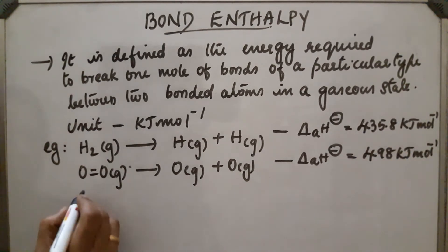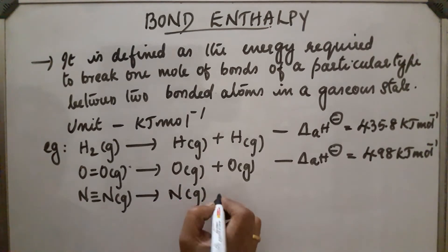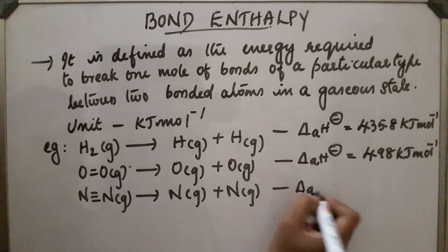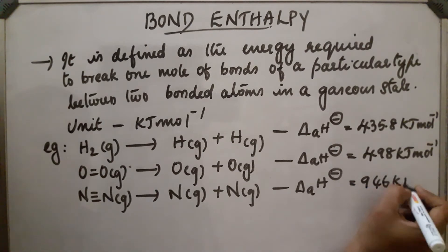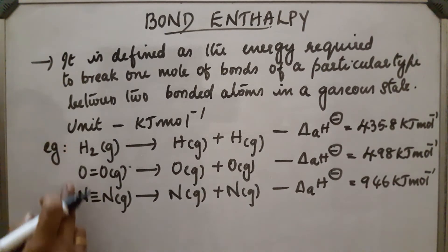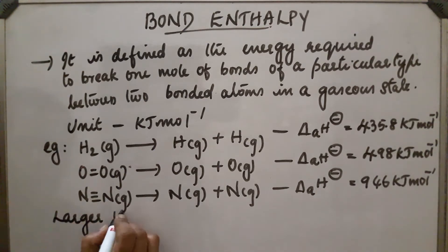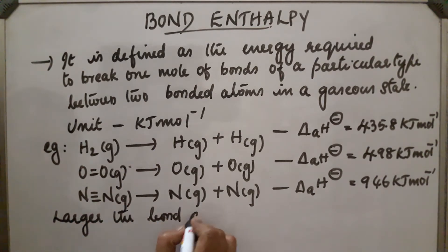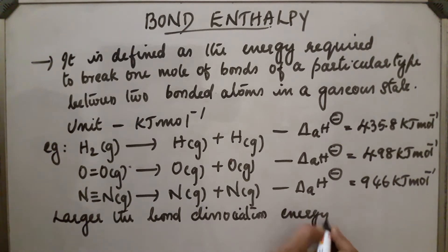In the case of N triple bond N converting into nitrogen atoms, the bond enthalpy is very high, found to be 946 kilojoule per mole. From this we can find that larger the bond dissociation energy, stronger will be the bond. N triple bond N has very high bond dissociation energy, so it is stronger than the other two.